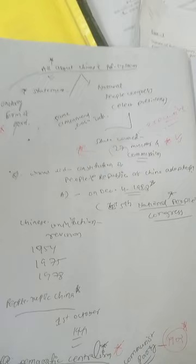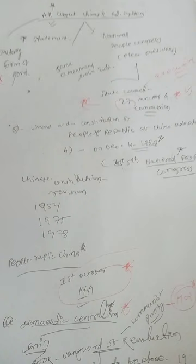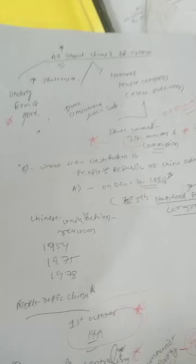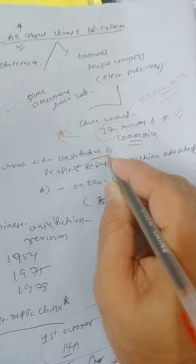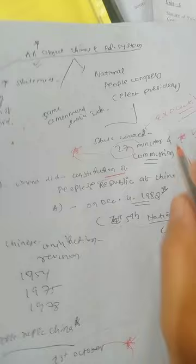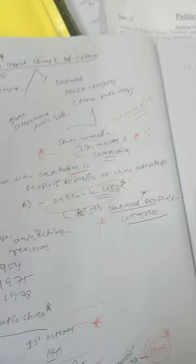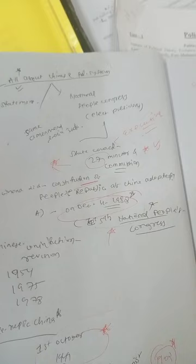The People's Republic of China was constituted on 1st October 1949. The People's Republic of China was basically created on 1st October 1949 — remember that date. Regarding the constitution, the People's Republic of China adopted its constitution on 4th December 1982. It was adopted in the fifth National People's Congress.